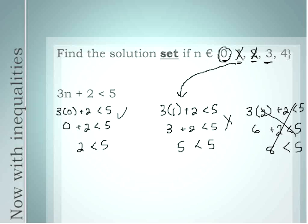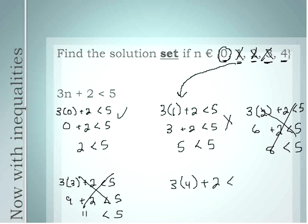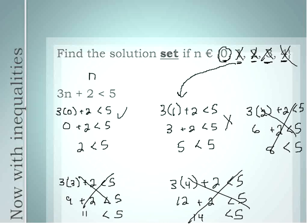Moving on to 3: notice that even though I've gotten one right answer already, I'm going to continue on because it's an inequality and I have to check every single value. 3 times 3 is 9, and 9 plus 2 is 11. 11 is not less than 5, so 3 does not work. And for 4: 3 times 4 plus 2 is less than 5 — 3 times 4 is 12, and 12 plus 2 is 14. 14 is definitely not less than 5, so we X that one out.